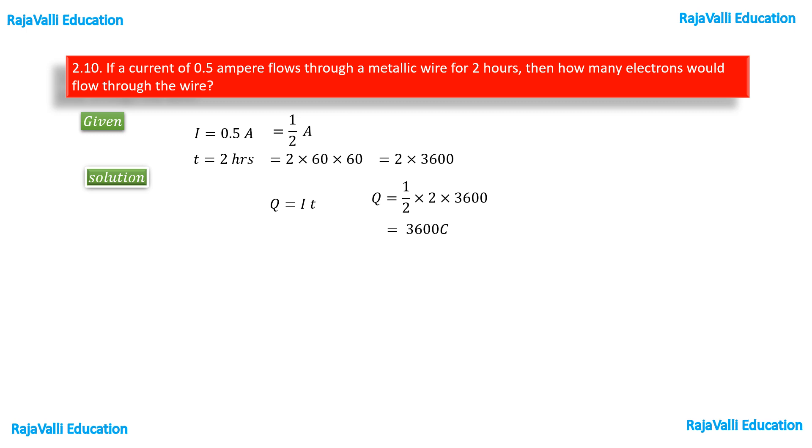Q equals 3600 coulombs. We know that one faraday of electricity contains Avogadro's number of electrons. One faraday is equal to 96500 coulombs and contains 6.02 times 10 to the power of 23 electrons.